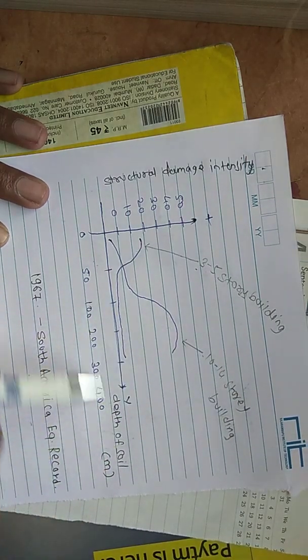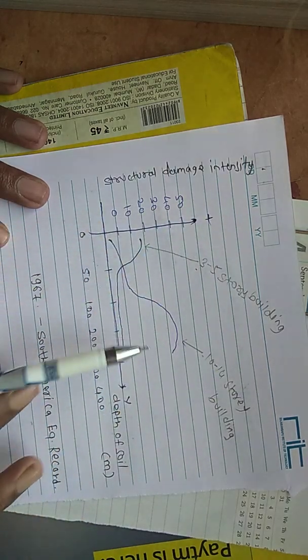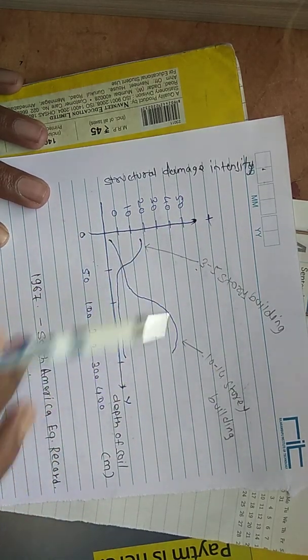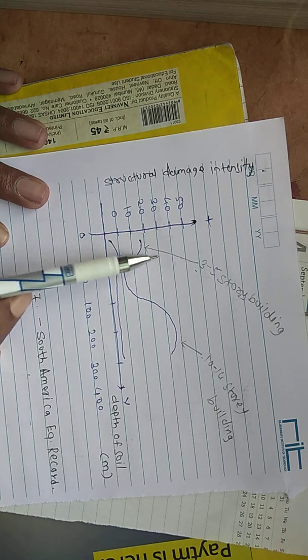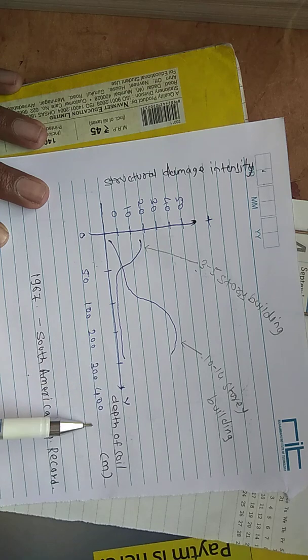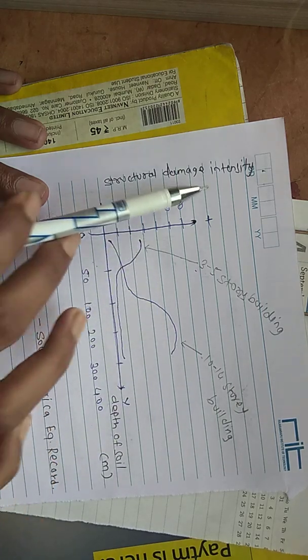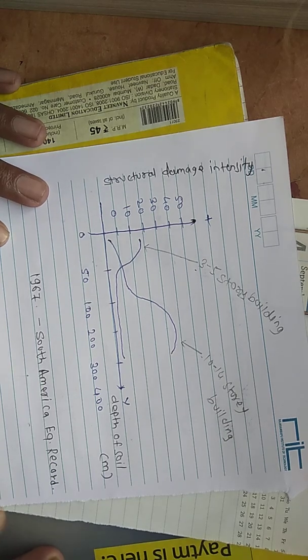This is very interesting. That means small story with small depth of soil—more damage. Tall story building with more depth of soil below it will suffer major damage intensity.